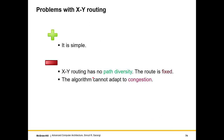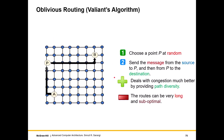The problems with XY routing are that while it is simple, there is no path diversity — the route is fixed — and the algorithm cannot adapt to any form of congestion.